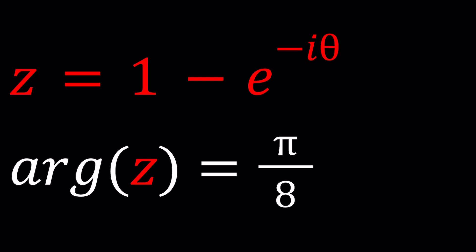We have z equals 1 minus e to the power negative i theta and argument of z equals pi over 8. Actually when I said argument I meant we're going to be solving for theta because argument of z is given. Let's see how we can do this. We'll talk about some interesting stuff, some trigonometry, a little bit of geometry, so on and so forth.